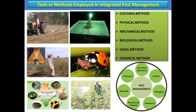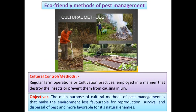Today we will discuss only the cultural methods of IPM. The name itself indicates that cultural methods involve regular farm operations carried out by farmers from ancient times or traditionally. Regular farm operation or cultivation practices are employed in a manner that destroys insects or prevents them from causing economic injury.